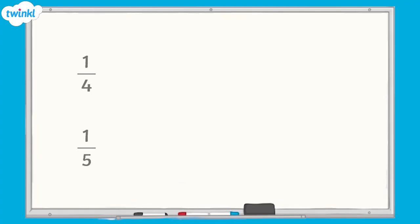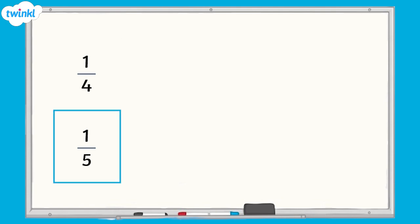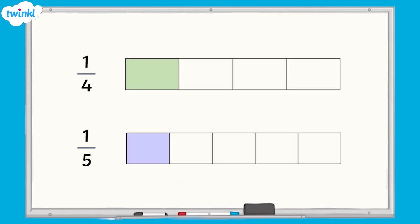Here we have two fractions with the same numerator: one quarter and one fifth. If we represent them using bar models of the same size, we can see that one quarter is greater than one fifth.